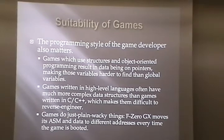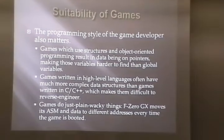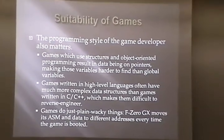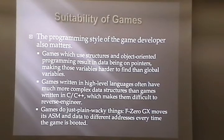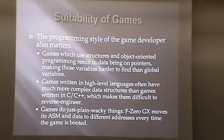The programming style of the game developer also matters. Games structured with object-oriented programming result in data behind pointers, which makes variables harder to find than global variables. Because it moves around — everything reloads each level. Games written in high-level languages often have more complex data structures than games written in C or C++, which again makes it difficult to reverse engineer. And finally, some games just do wacky things. We worked with one game that moves around all of its assembly code to a different address each time you boot the game — you can't get exactly the same settings. We don't know why it does that, but it's kind of annoying.